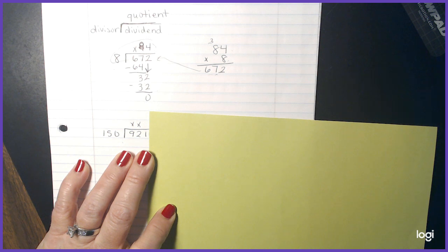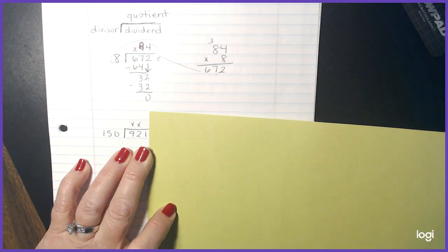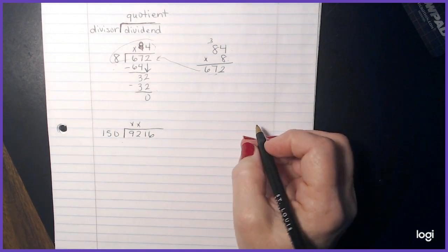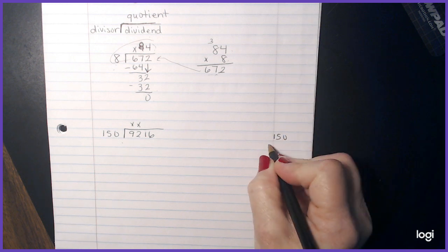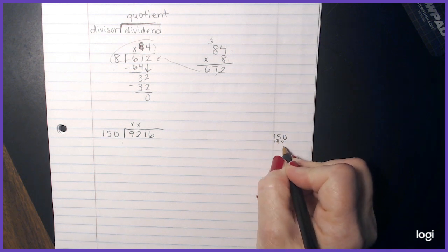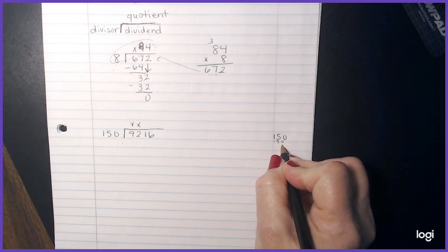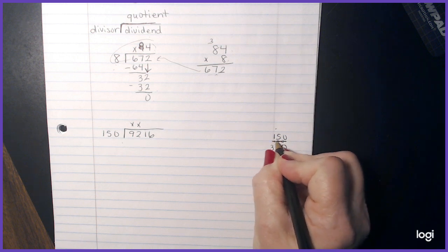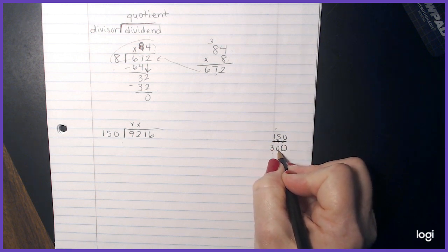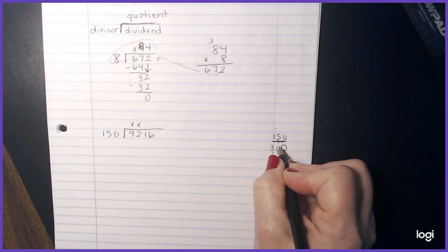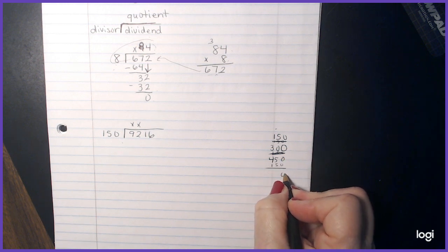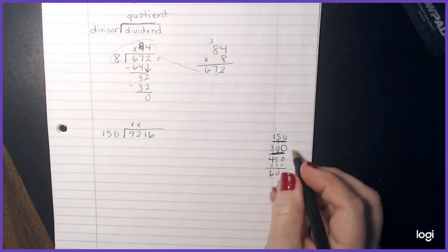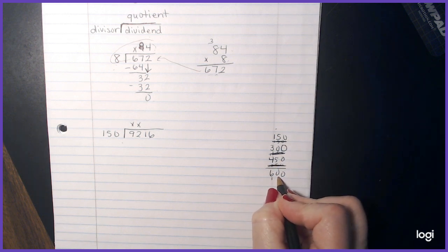Now, unfortunately, 150 is not on my multiplication chart. So I can either do a couple of things. I can either come over here and start doing some guessing and checking, or I can start listing 150s. So I've had people do both. I can count by 150, so I just keep adding 150 over and over and over.